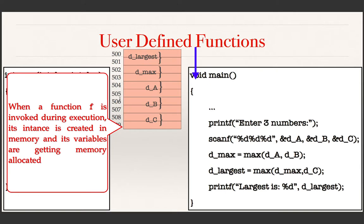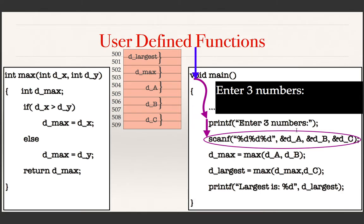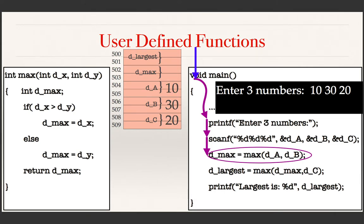We assume that all these are integer variables and an integer variable requires two bytes to store the value. First the control comes to the printf statement, so this message will be displayed on the screen. The next statement is a scanf statement — it requires the user to input three values. Assume that the user gives 10, 30, and 20 as values; then these values will be stored in the variables dA, dB, and dC in that order and stored in the corresponding memory locations.